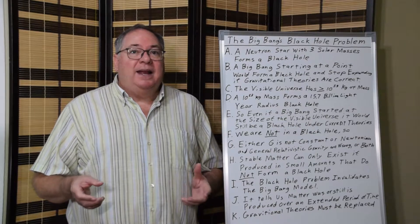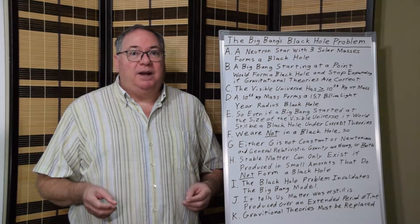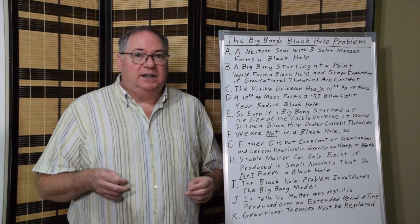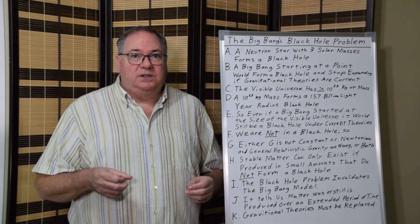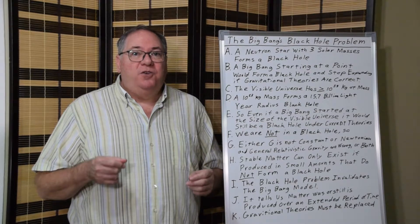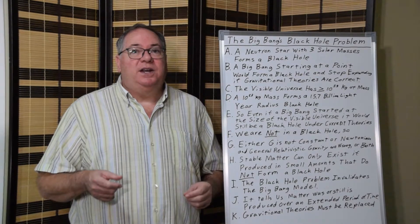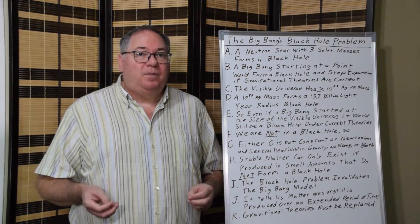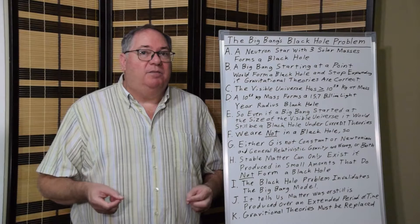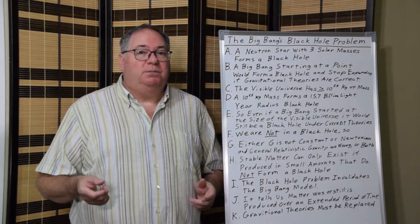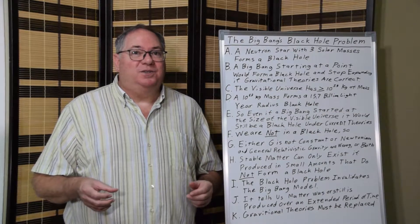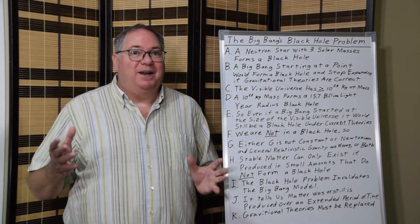And that can actually happen with very small amounts of mass. In the case of our sun-sized neutron stars, a neutron star with a mass three times our sun becomes a black hole. So it doesn't take a lot of matter to produce black holes when you're talking about universal scale sizes and amounts of matter.